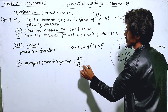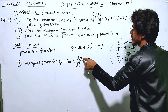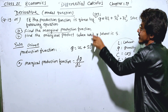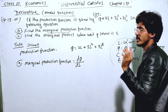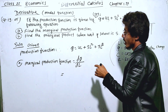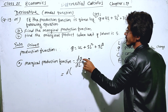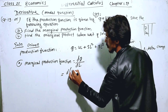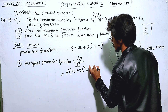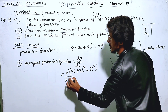The marginal production function is equal to dQ divided by dL. So we differentiate Q — which equals 4L plus 3L squared plus 7L cubed — with respect to L.